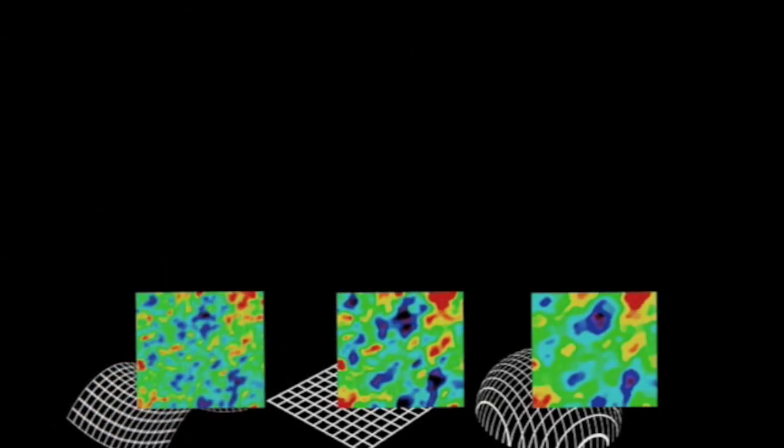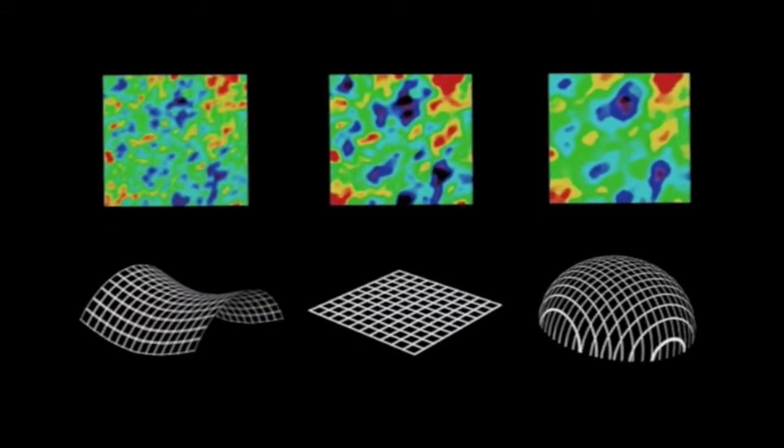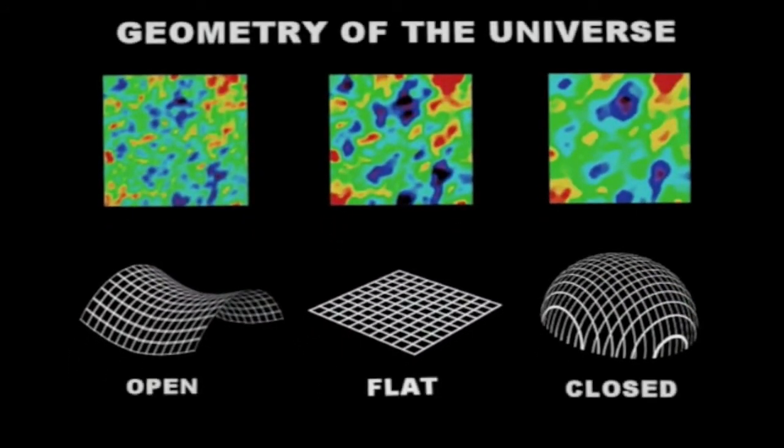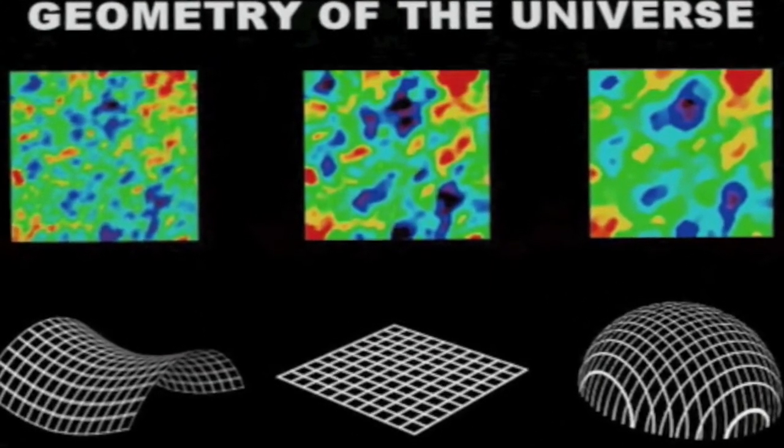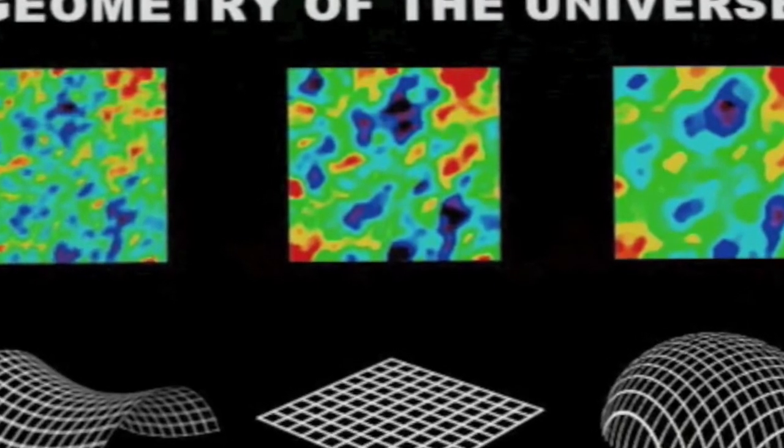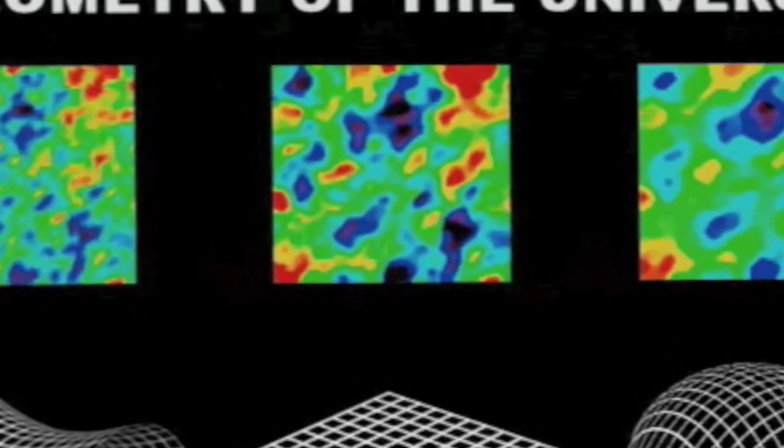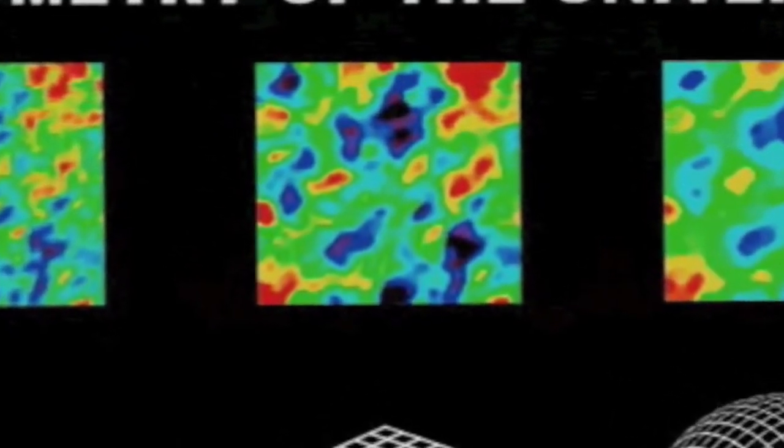After careful measurements of the cosmic microwave background using WMAP data, the average distance between fluctuations was found to be one degree, with an accuracy of 15% and an error of 2%. The universe, it appears, is flat.